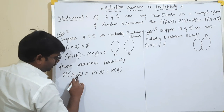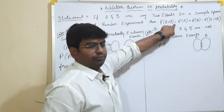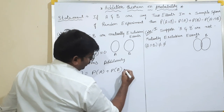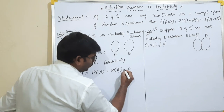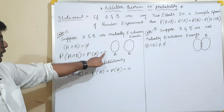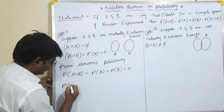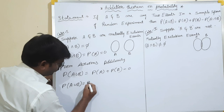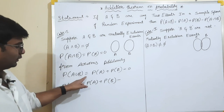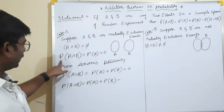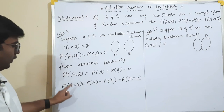So P of A union B equals P of A plus P of B. Since A intersection B equals 0, we get minus 0. So P of A union B equals P of A plus P of B minus P of A intersection B. I have proved the first condition.